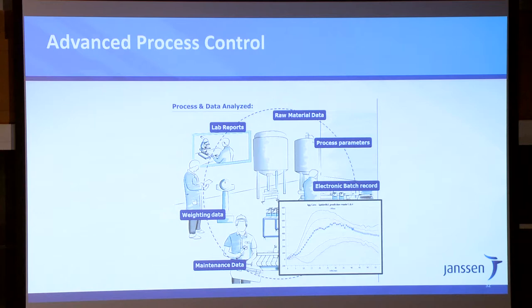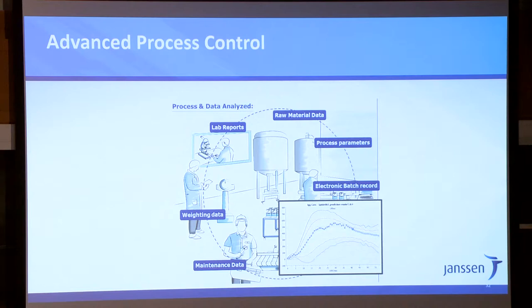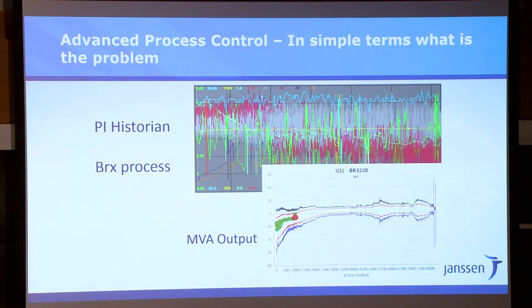How do we bring this and start to integrate everything into a system of really advanced process control? Here is an example from bioreactors. The PI historian is the system that captures all the process data — there are hundreds of variables associated with running a bioreactor: not just the bioreactor itself but the set points of all your valves, air flows, and all kinds of stuff. No human can look at that diagram and tell you what's good, what's bad, or how to improve it. So we do very basic multivariate analytics and put it all into one picture.